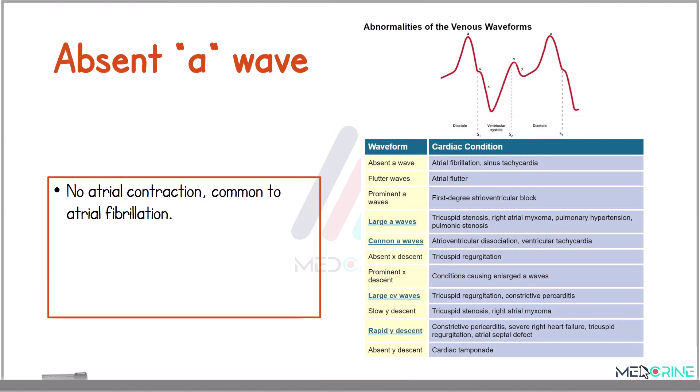An absent A wave is a hallmark of atrial fibrillation. Because there is no coordinated atrial contraction, the atrial contribution to the venous pulse disappears.